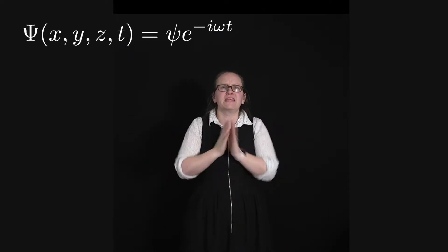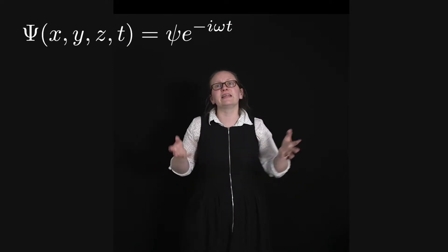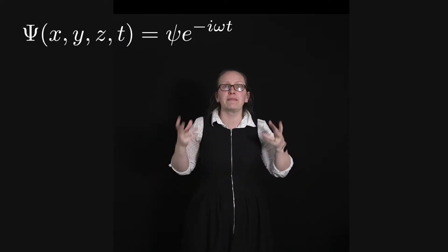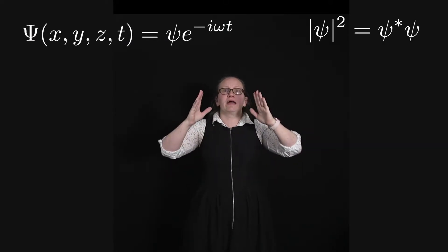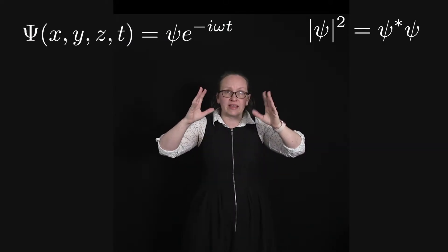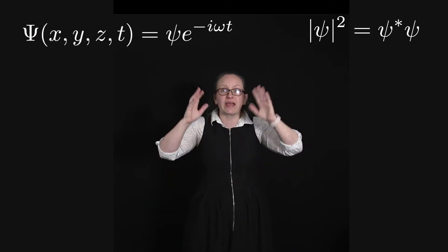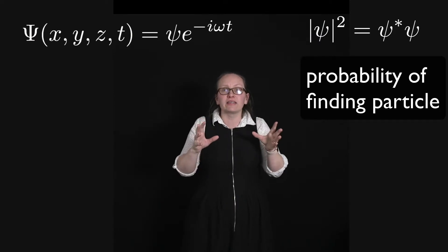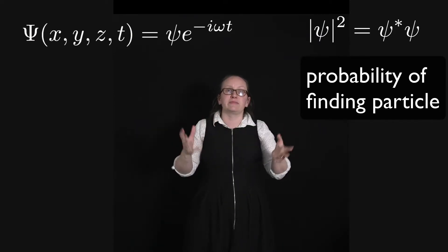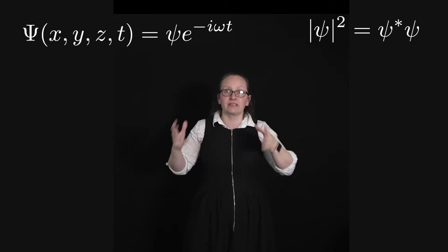Okay, now physically what does this mean? Well physically this is again a probability wave. So the absolute magnitude of Psi squared, that's the spatial part of the wave function squared, gives us the probability of finding the particle within a specified volume within a specified time interval.